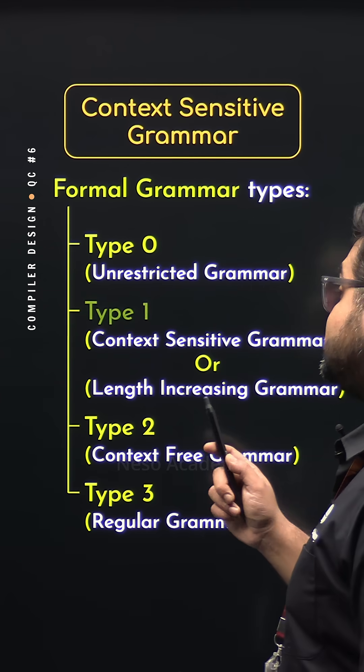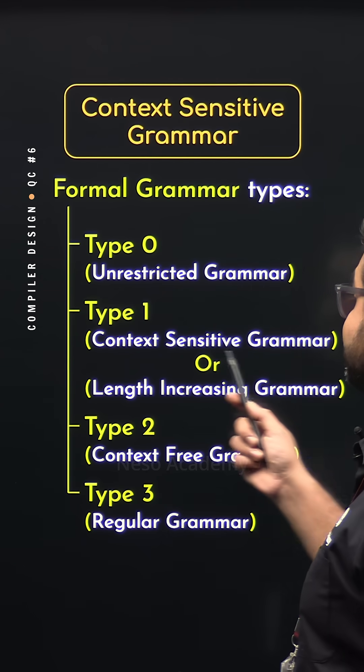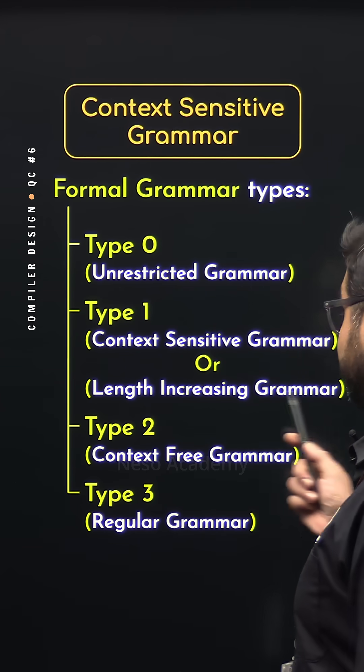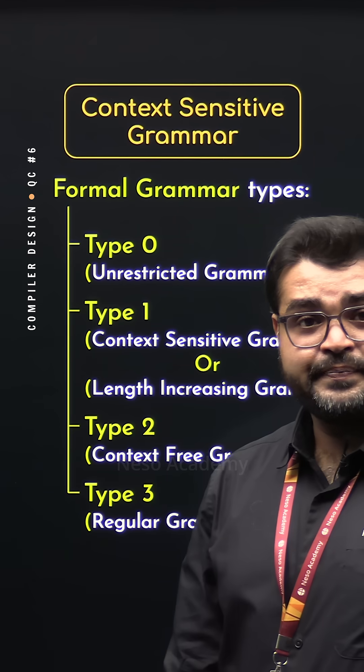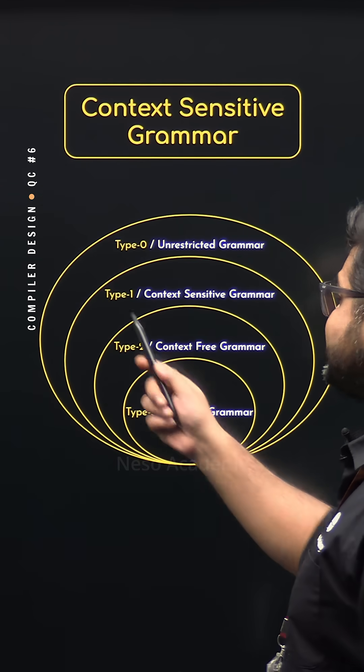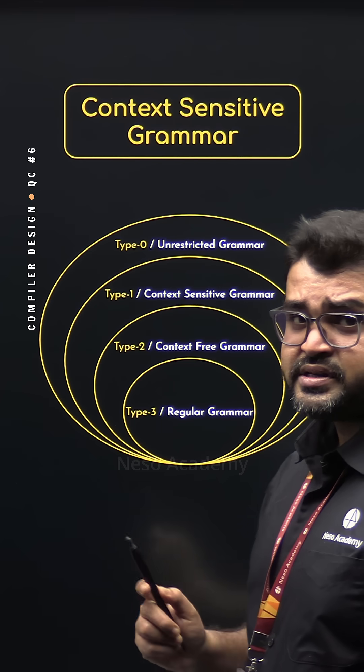The type 1 formal grammar is also known as context-sensitive grammar and length-increasing grammar. Let's learn why. Take a note, type 1 is a subset of type 0 grammars.